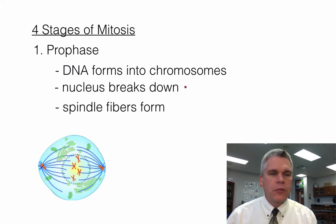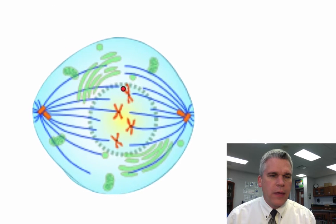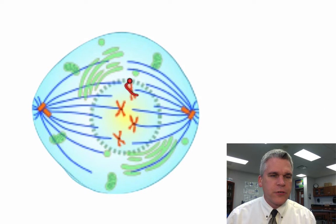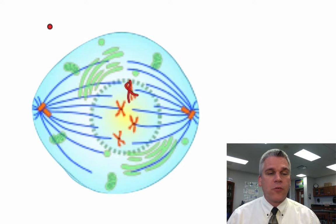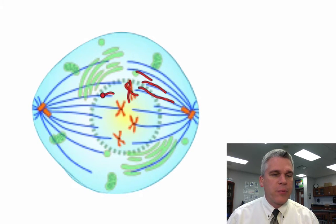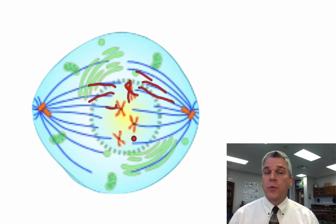Let's take a closer look at this cell. We have these X-shaped structures are the chromosomes. So that's the DNA that formed into the chromosome shape. These blue lines, these are the spindle fibers, and they're made of a protein. The chromosomes are going to attach to these spindle fibers.